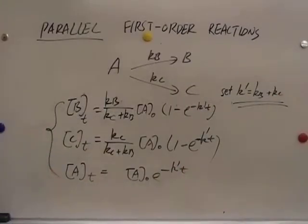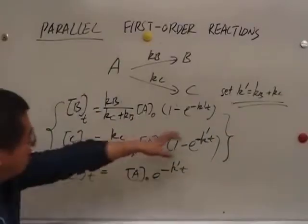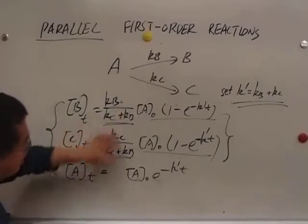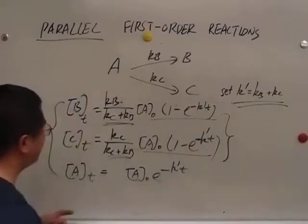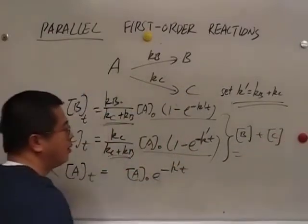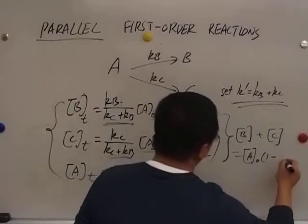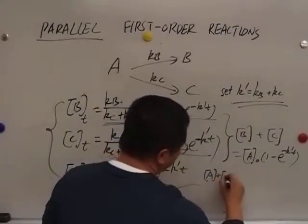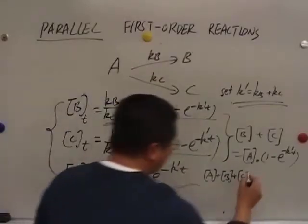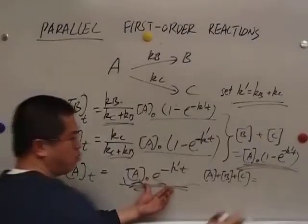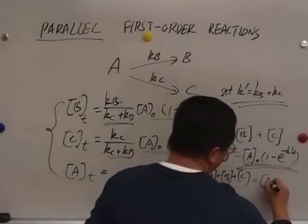And we can verify if we got the right result. We just sum it up. Hopefully we get A naught. We're going to combine these two first. If we combine these two, if we look at this part and this part, they are the same. And this part plus this part. If you sum it up, you get one. So if you add the concentration of B and C, it's equal to A naught times one minus e to the power of negative K prime t. And then A plus B plus C. Basically you just need to add this. This B plus C, this A at time t. You include this one and this one. You sum it up. You get A naught. And that's good.